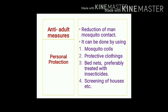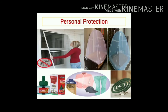Personal protection aims to reduce man-vector (man-mosquito) contact. Methods include use of mosquito coils, personal protective clothing, bed nets or mosquito nets — preferably insecticide-treated — and screening of houses. These measures reduce contact with vector mosquitoes and provide protection against bites.